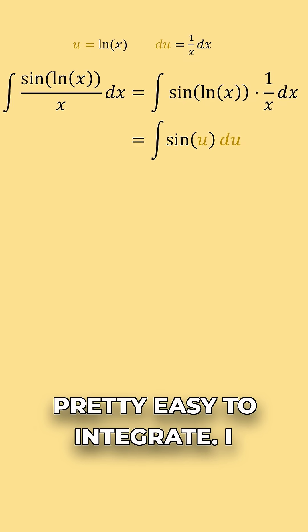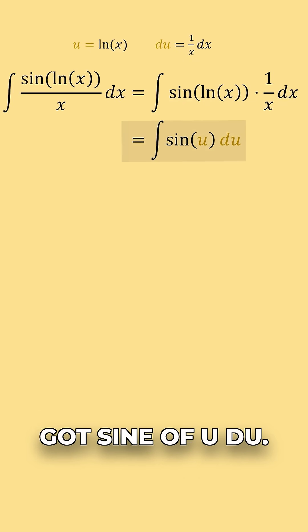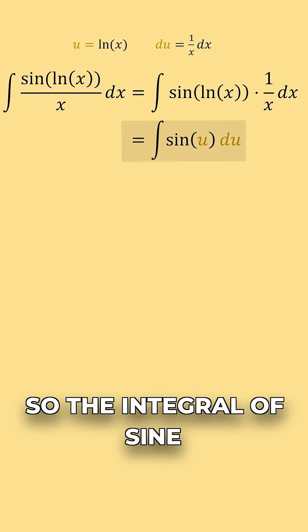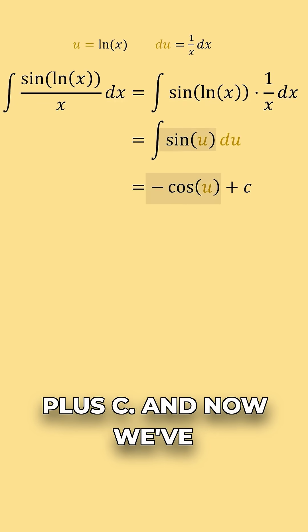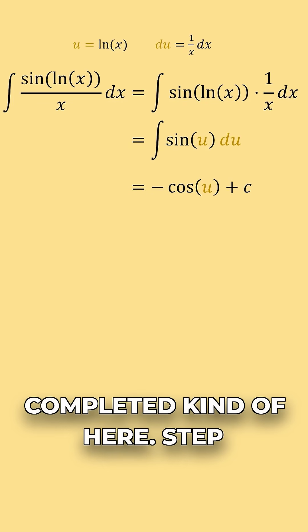Well, this now looks pretty easy to integrate. I got sine of u and du. So the integral of sine of u is going to be negative cosine of u plus c. And now we've completed step two.